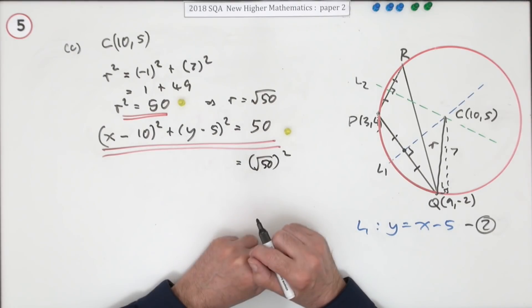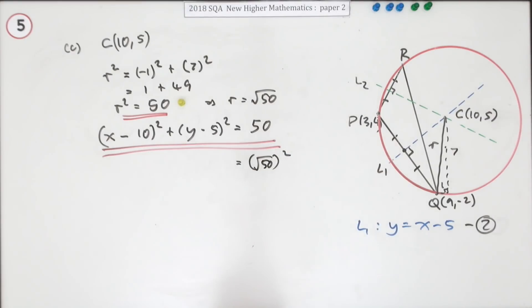You'd have to square that back up to 50. If you left it like that, you wouldn't get that mark. So square it out, then you'll get the mark.